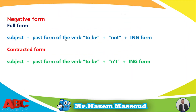Let's move to the negative form. We'll start with the full form or long form: subject plus the past form of verb 'to be', plus 'not', plus the -ing form. And the contracted form — a short form of the negative — is: subject plus past form of verb 'to be', plus 'n't', plus the -ing form.